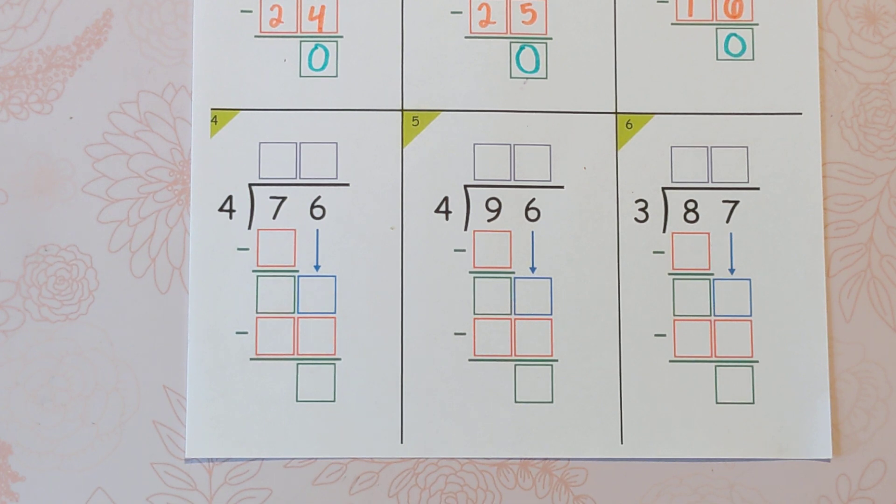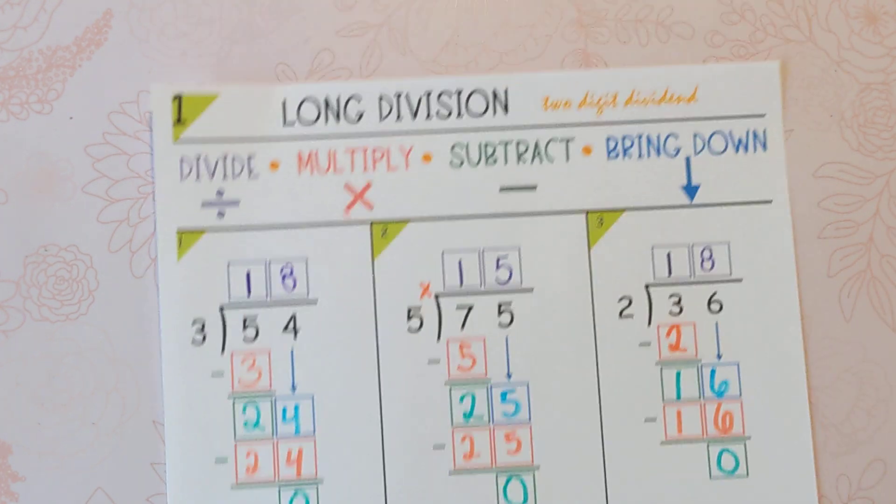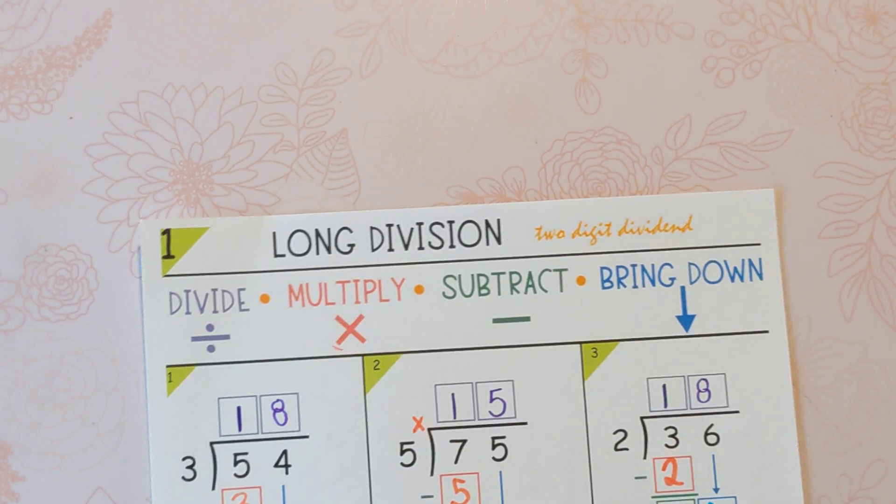So the standard algorithm has four steps: divide, multiply, subtract, and bring down.